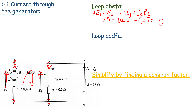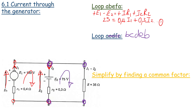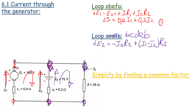We call this equation 1. Now for the next loop, B-C-D-E-B. Working clockwise, E2 is positive, I2 is negative, and I3 is positive. So we have: +E2 = -I2·R2 + (I1 - I2)·R3. The battery voltage is 75 volts.